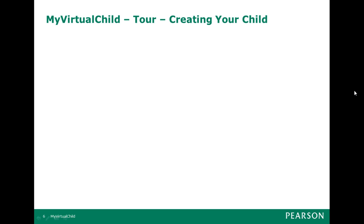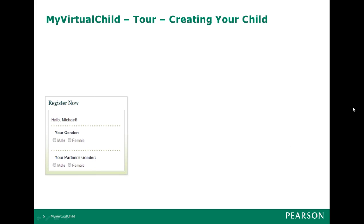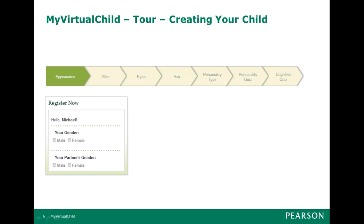Let's look at what a student sees as they go through the system, starting with creating your child. To begin with, you're given a choice of gender and your partner's gender. You can have a same-sex couple if you want — it's very politically correct, this system. It's going to take you through a path where you can choose the appearance of the child: skin, eyes, hair, and so forth.